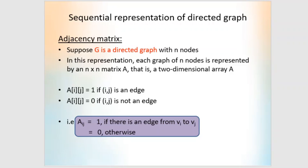Now let us discuss the sequential representation of a directed graph. Suppose G is a directed graph with n nodes. Each graph of n nodes is represented by an n×n matrix A. If we have 6 nodes, the matrix is 6×6; if 5 nodes, it is 5×5. The entry Aij equals 1 if there is an edge from Vi to Vj, and 0 otherwise.